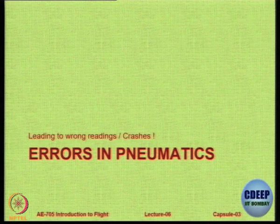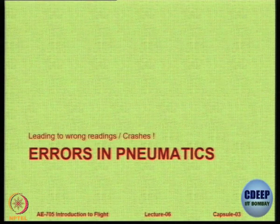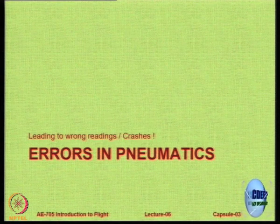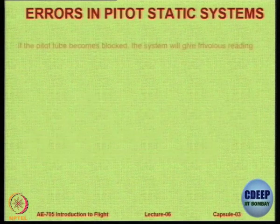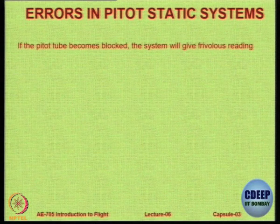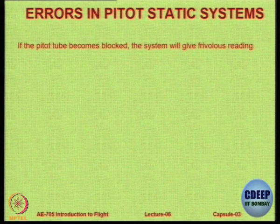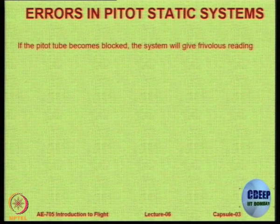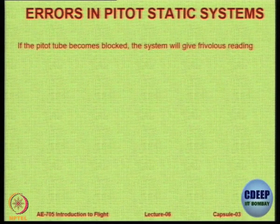Pneumatics is dependent on how well-sealed the instrument is, how well-sealed the system is, and how well the pressure is conveyed. As discussed in the last lecture, there could be wrong readings because of blockages. If the tube becomes blocked — it could be blocked at the front where total pressure is read, or on the sides where static ports are, or both — the readings will be erroneous.